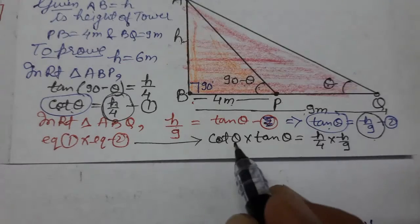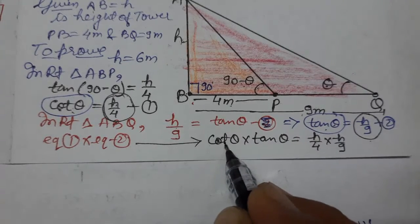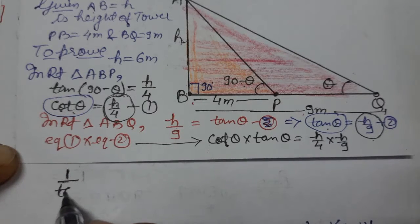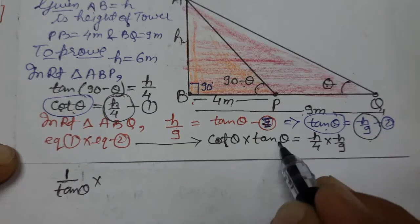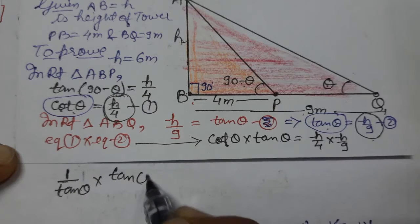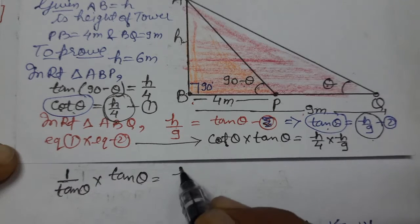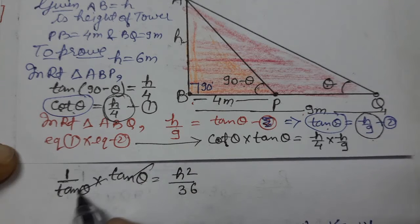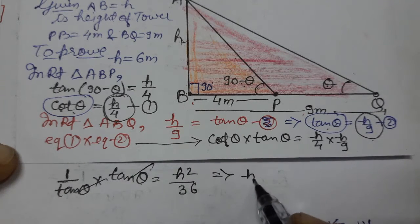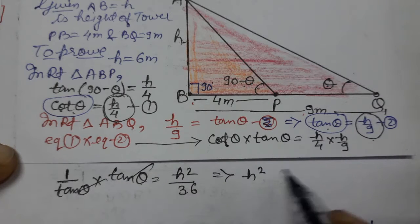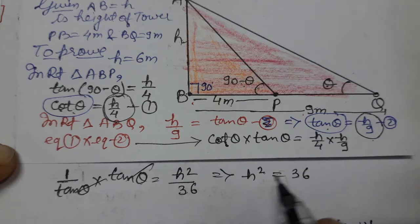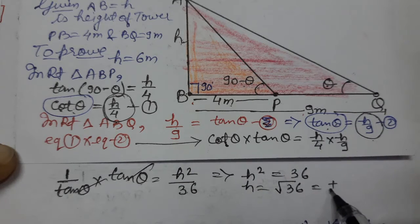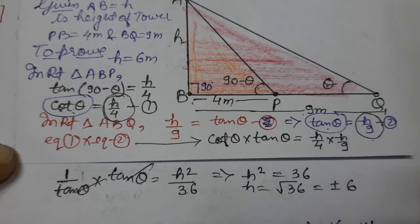We know that tan theta into cot theta equals 1. So h by 9 into h by 4 equals 1, which gives us h squared over 36 equals 1.